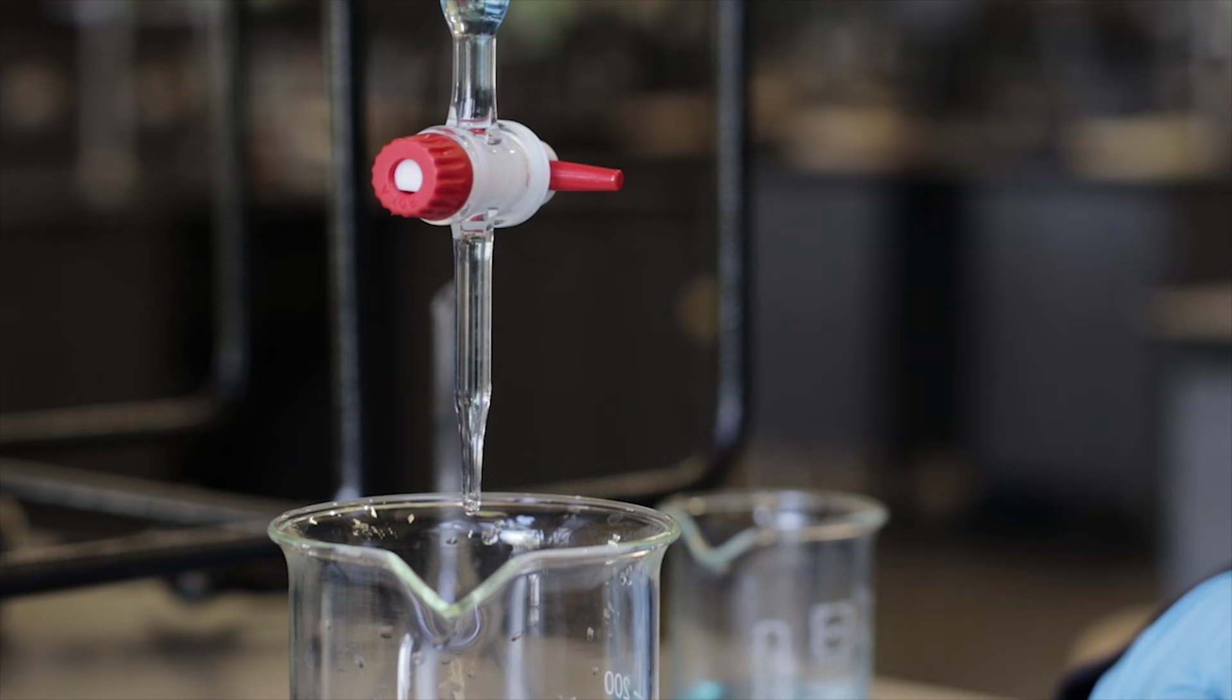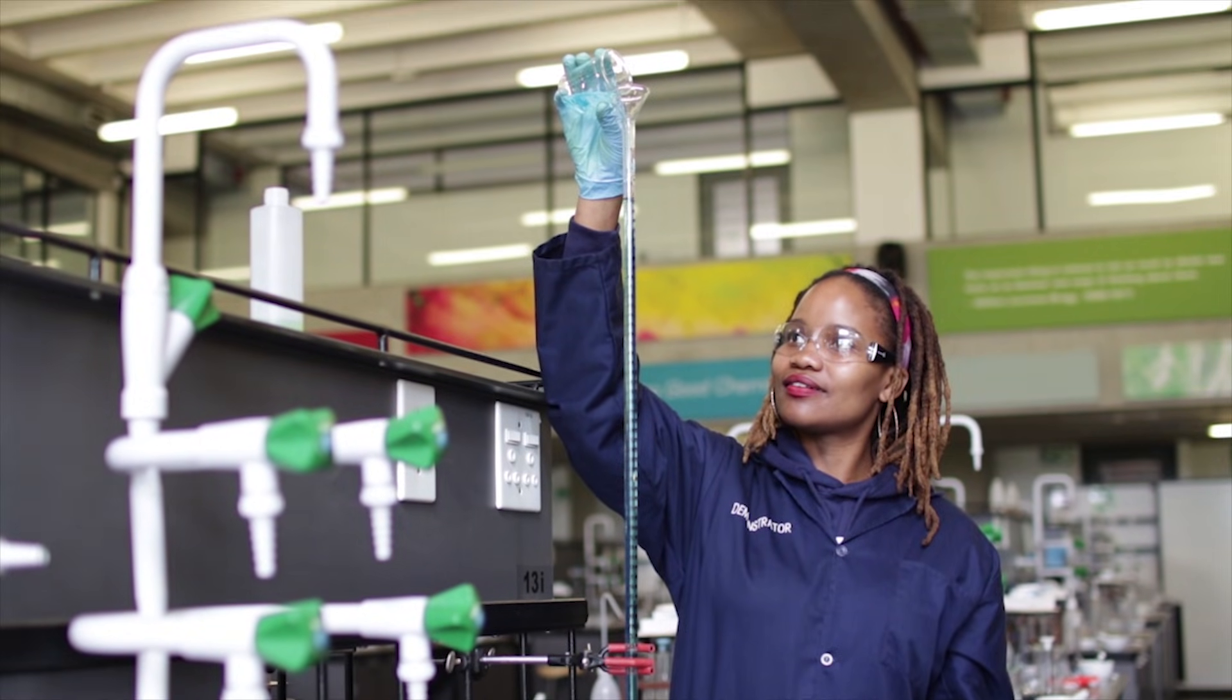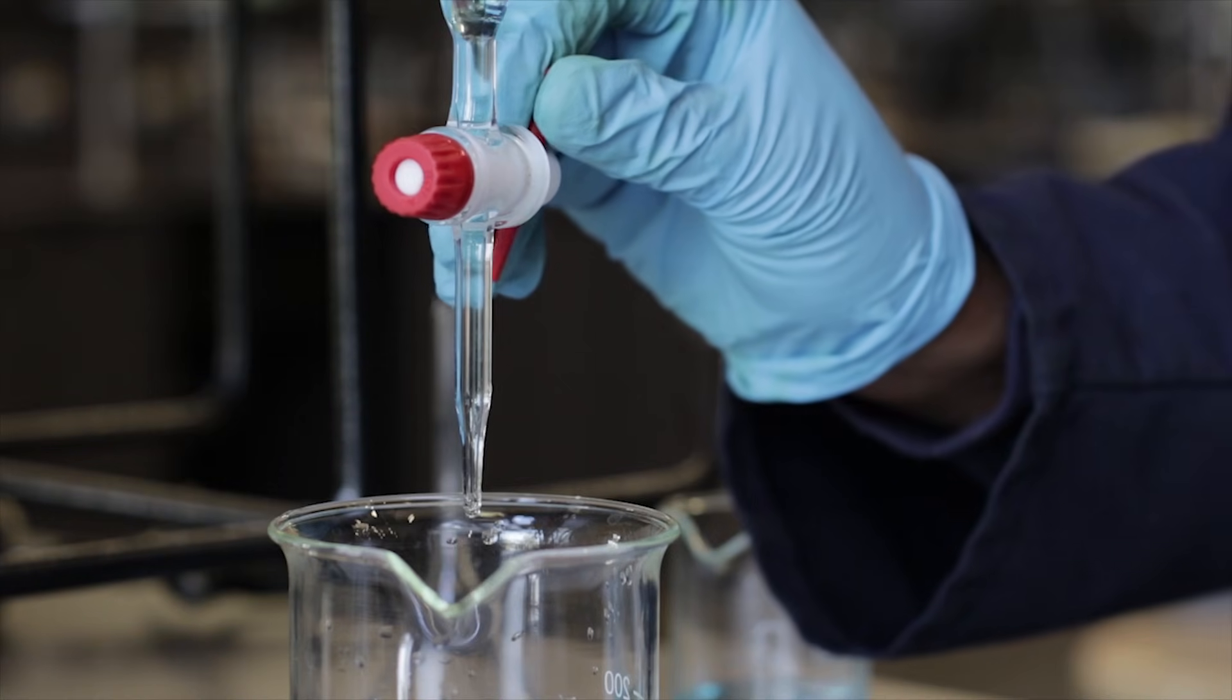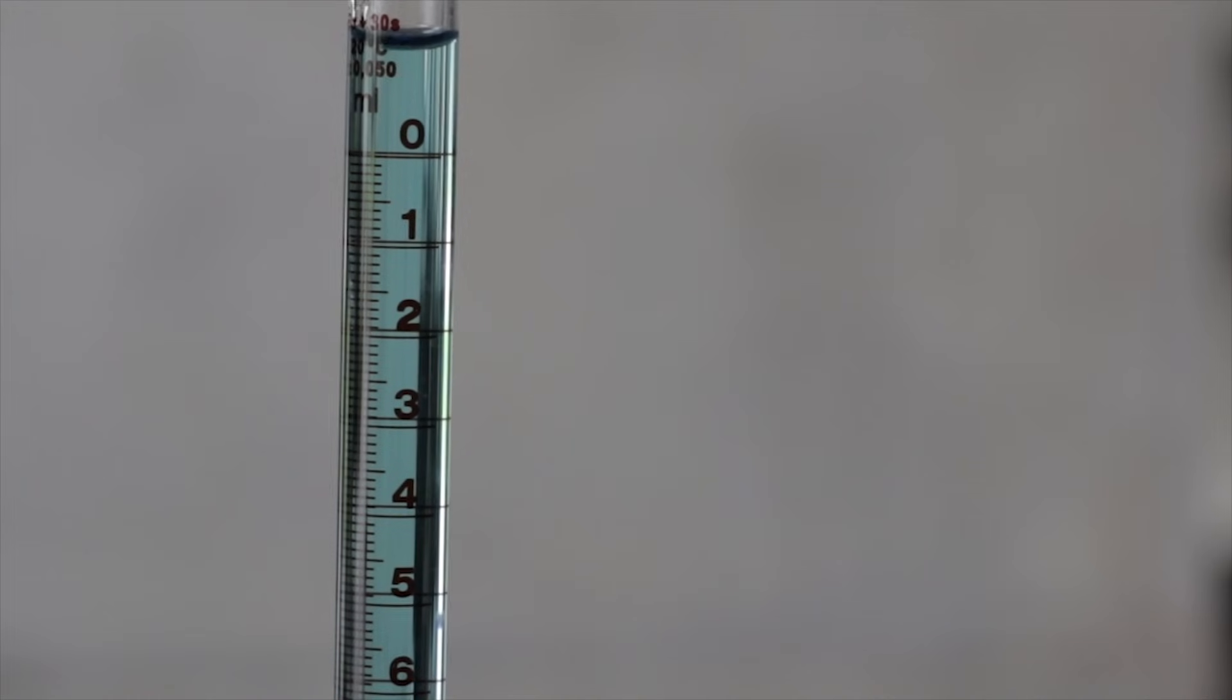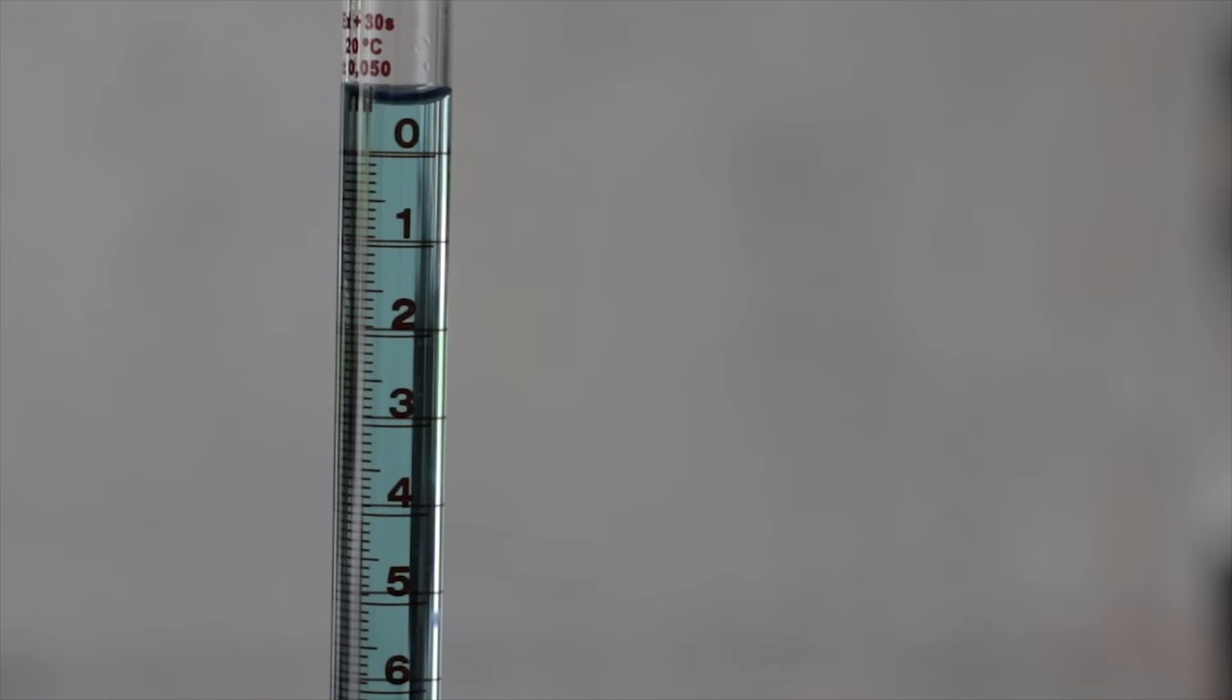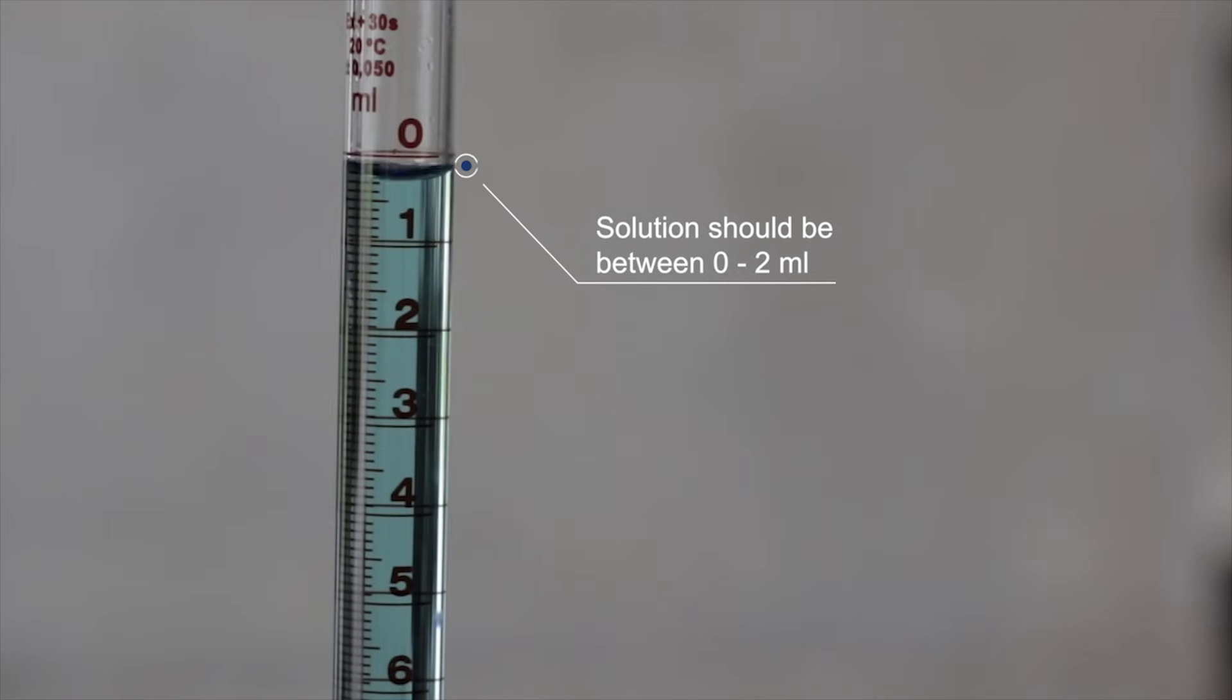Once the air bubbles have been removed the burette is refilled with the solution using the procedure mentioned before. At this point the burette tap is open to let the solution run out until the lowest part of the meniscus is level with any graduation mark of the burette between 0 and 2 milliliters.